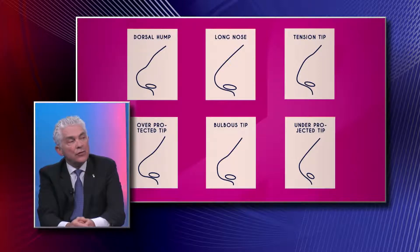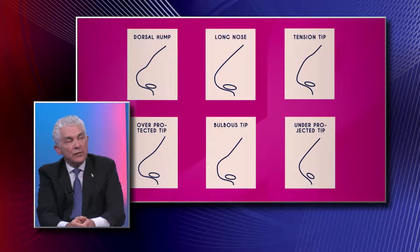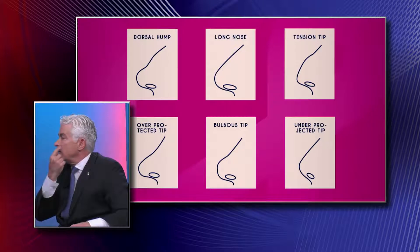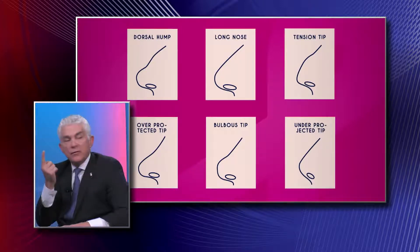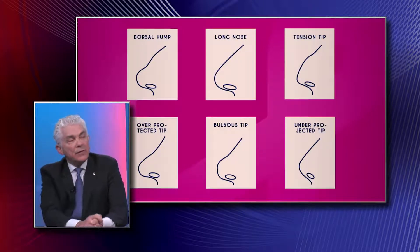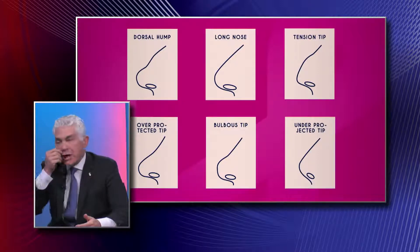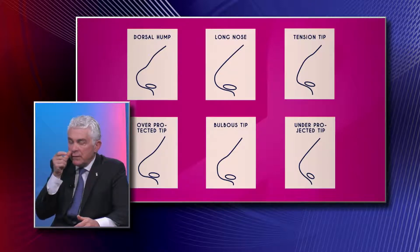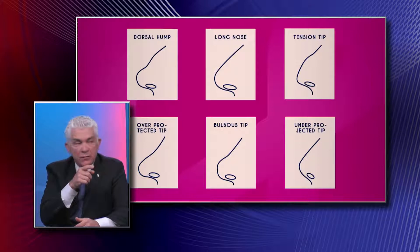The top two — the dorsal hump, the long nose, and the tension nose — are ones you can easily do with a closed technique, because all you have to do is reduce the bump or reduce projection. Projection is the distance between your face and how far out your nose goes. The bottom ones would need an open rhinoplasty, because when you're over-projected it means your nose sticks out too far, and it's harder to reduce projection with a closed approach.